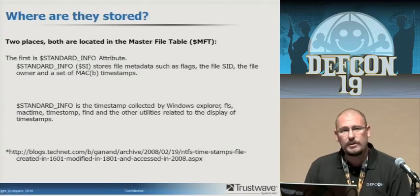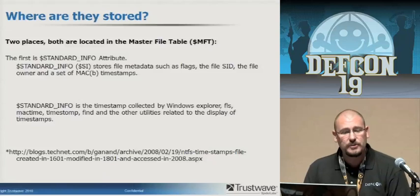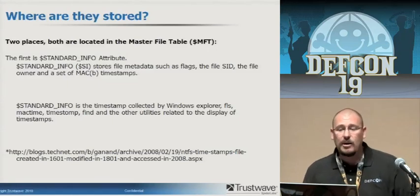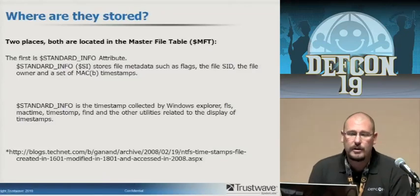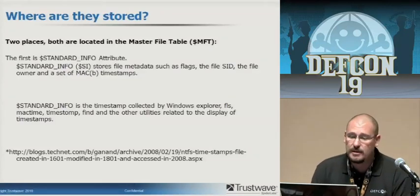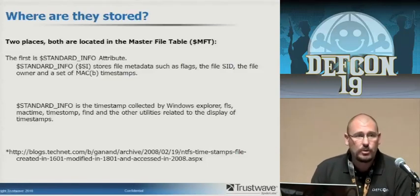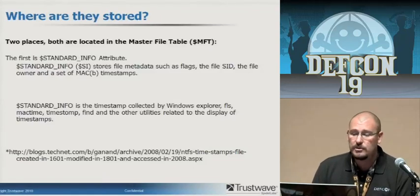Where are the timestamps stored? They're stored in two places, both located in the master file table. The first is the dollar standard info attribute, or the SI attribute. It stores file metadata like flags, data about data, the file owner, and one set of MAC-B timestamps. This is the timestamp collected by Windows Explorer when you sort by date, or by utilities like FLS, Mac time, and Timestomp — all utilities related to the display of timestamps pull from here.